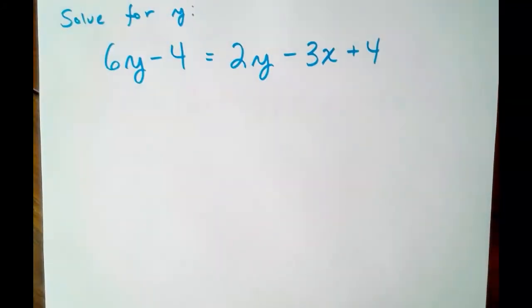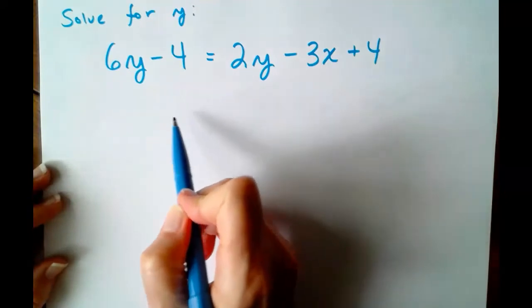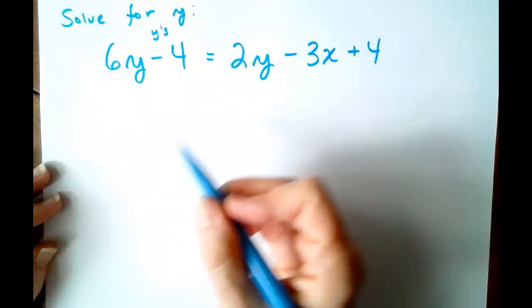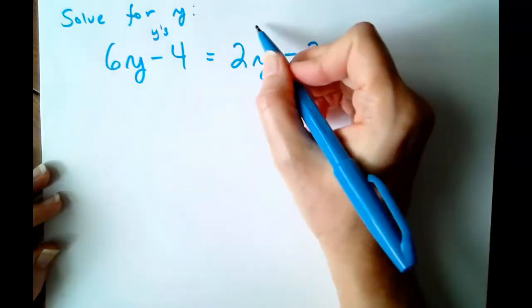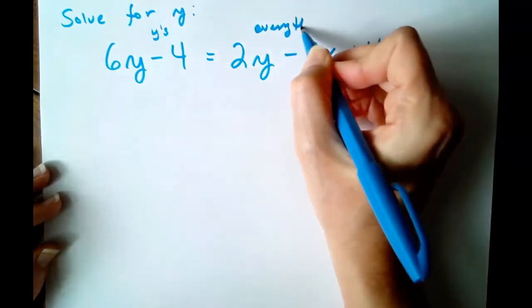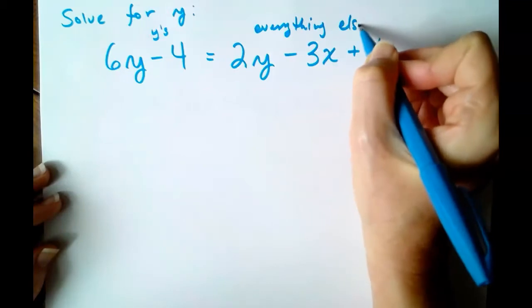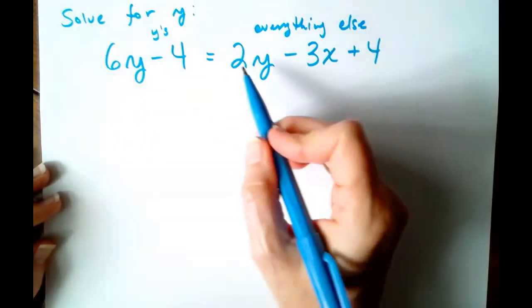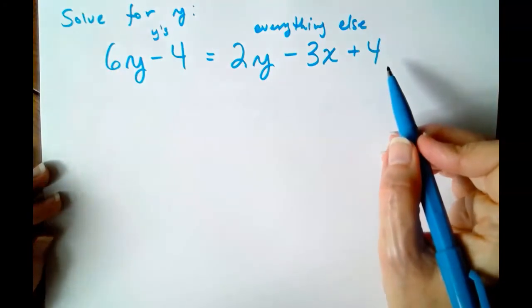I've got a couple more equations where we are solving for Y in terms of X. And the next two will get a little more complex, so think about what we're doing. We want all our Y's on the left. So any term that has a Y, bring it to the left. Everything else needs to come over to the right. So Y's on the left, X's and constants on the right.